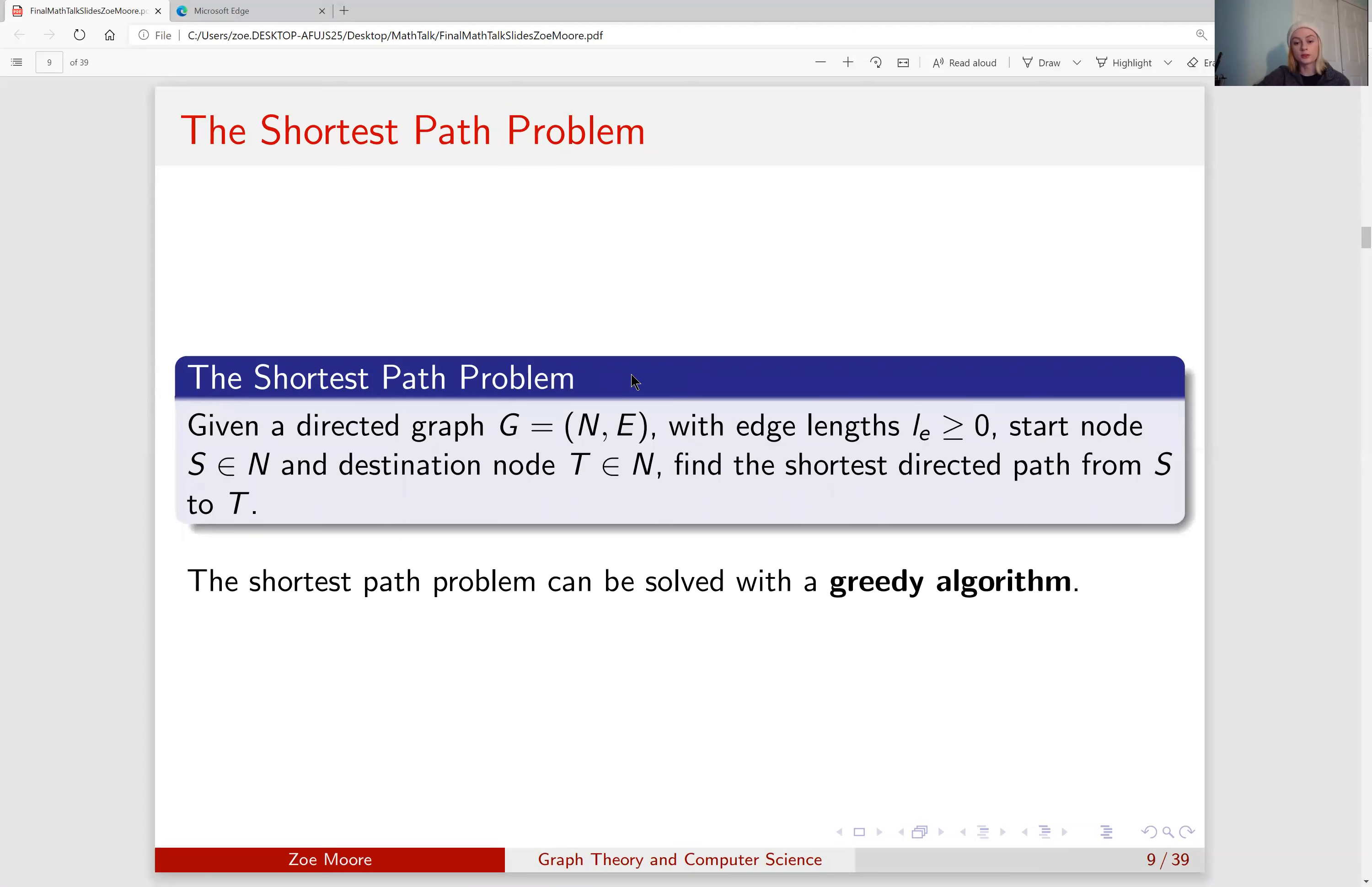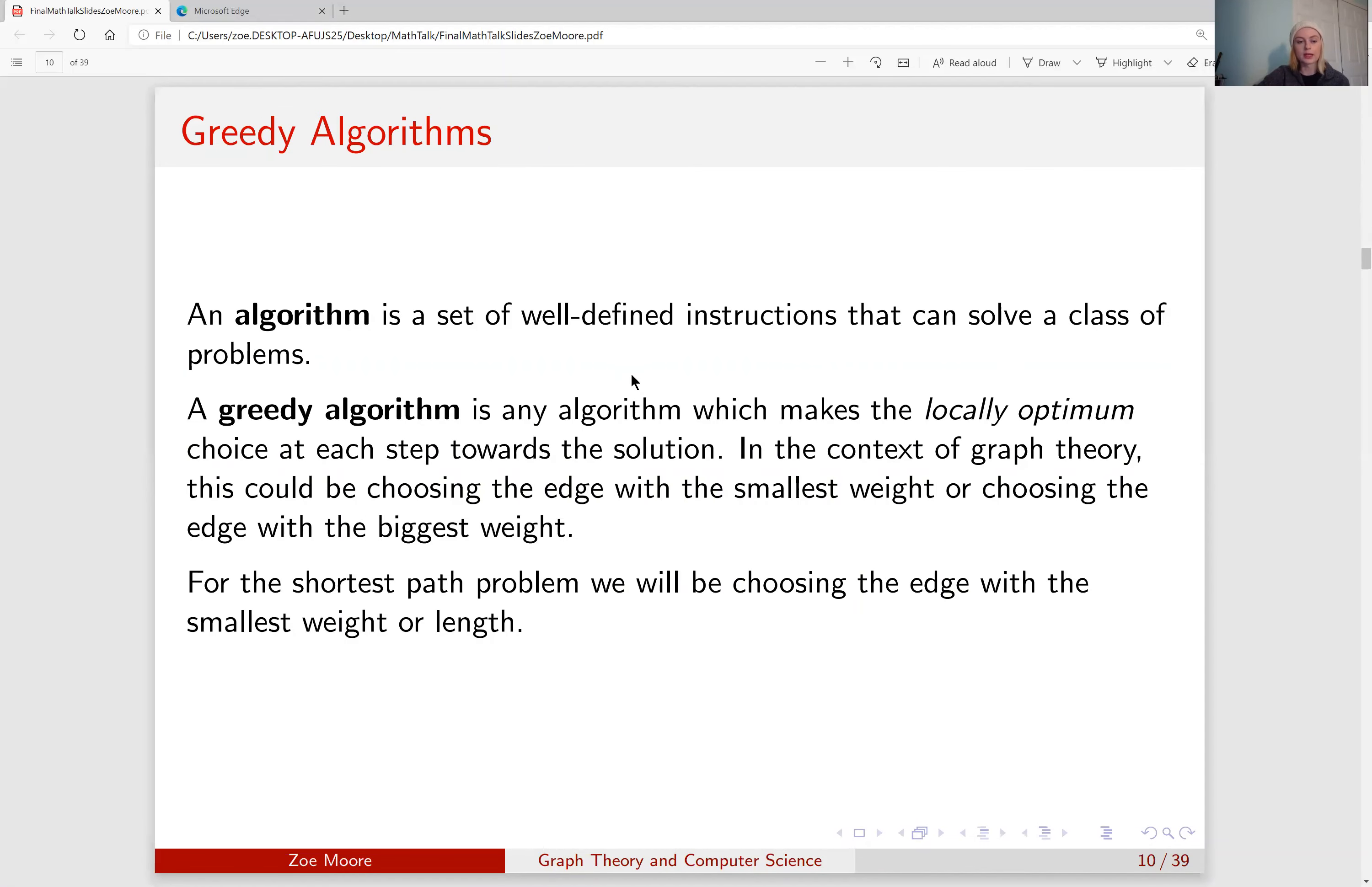We can solve this with what is called a greedy algorithm. An algorithm is a set of well-defined instructions that can solve a class of problems. And a greedy algorithm is any algorithm which makes the locally optimum choice at each step towards the solution. Locally optimum meaning either making the shortest choice or the least costly choice, whichever choice that is best fitting the problem. In the context of graph theory, this could be choosing the edge with the smallest weight or choosing the edge with the biggest weight. For the shortest path problem, we will be choosing the edge with the smallest weight or shortest length.